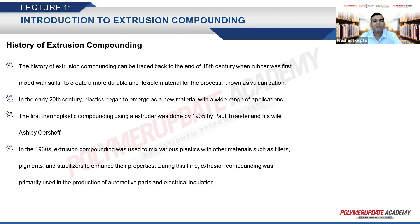The history of extrusion compounding can be traced back to the end of the 18th century, where rubber was first mixed with sulfur to create a more durable and flexible material — a process known as vulcanization. Sulfur bonds create cross-linking, producing a thermoset-like vulcanized structure of rubber, creating more rigidity that enables it to be used for various applications, since unvulcanized rubber is very elastic and soft with lower mechanical strength.